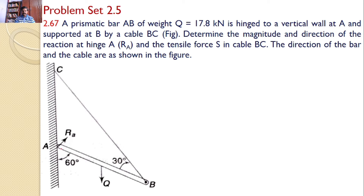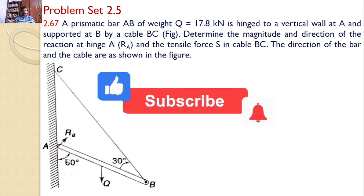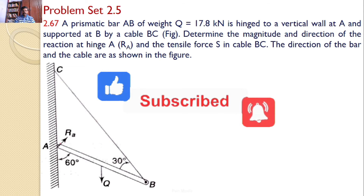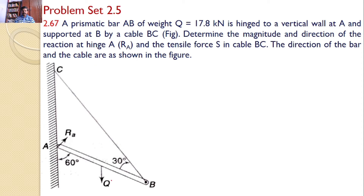There is a prismatic bar AB tied with a cable BC as shown in the figure. Our interest is to find the reaction RA and the force in the string BC. We will discuss the various forces acting on this prismatic bar AB. It is given that it is a hinged support, which introduces two reactions: a horizontal reaction RH and a vertical reaction RV.